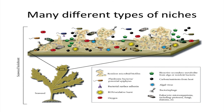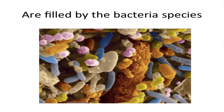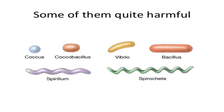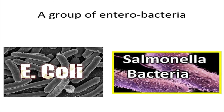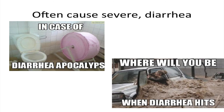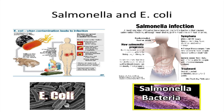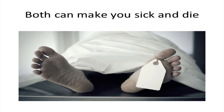Many different types of niches are filled by the bacteria species. Some of them quite harmful, others are beneficial. A group of enterobacteria often cause severe diarrhea — Salmonella and E. coli both can make you sick and die.